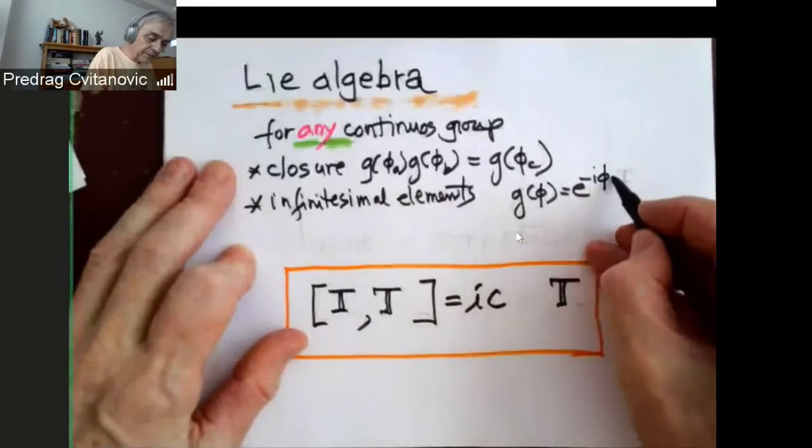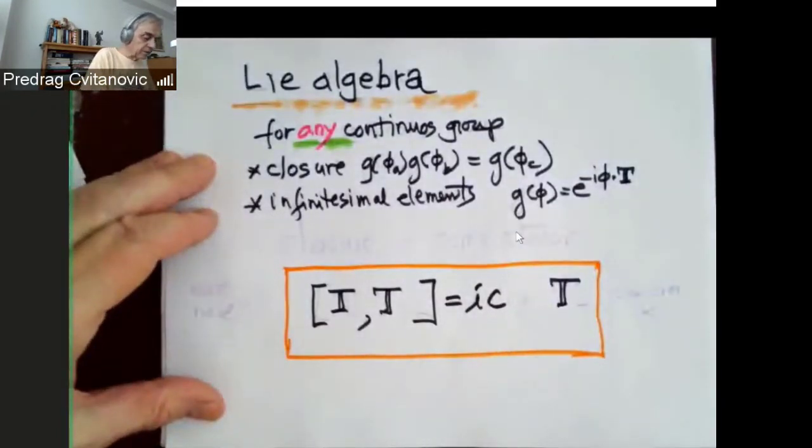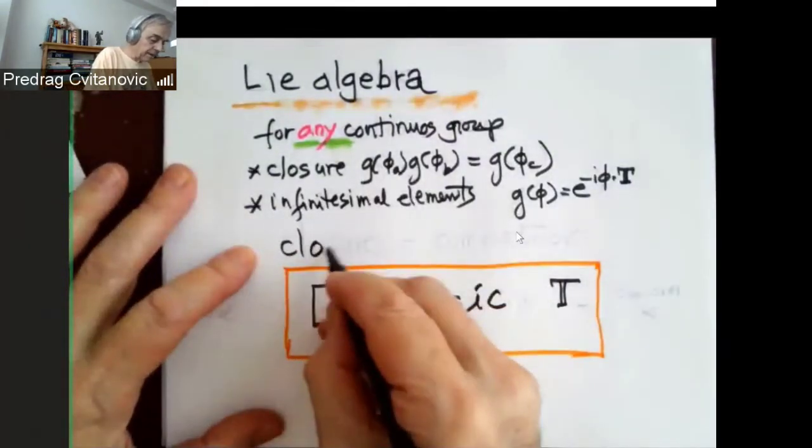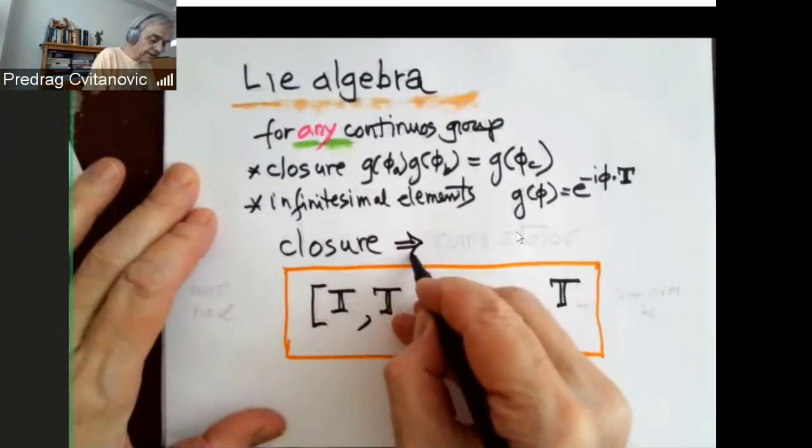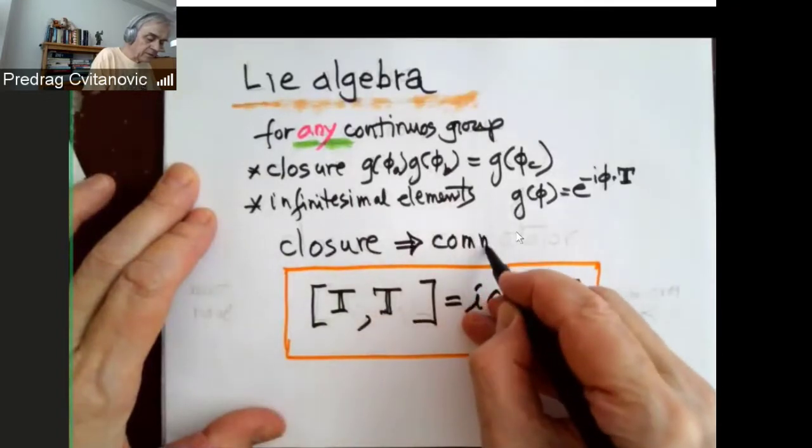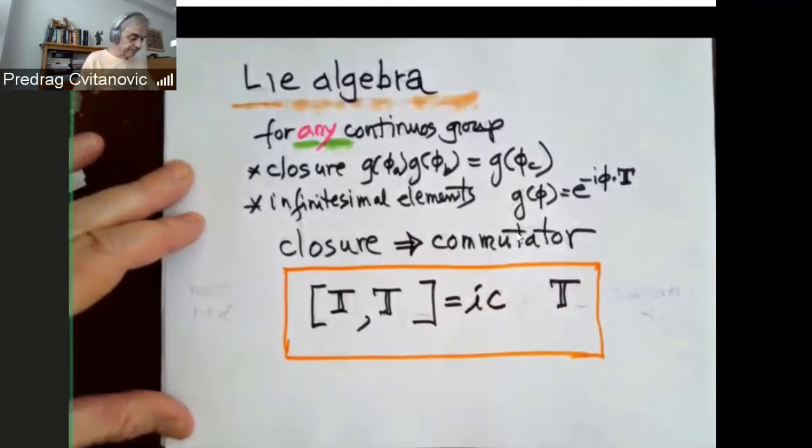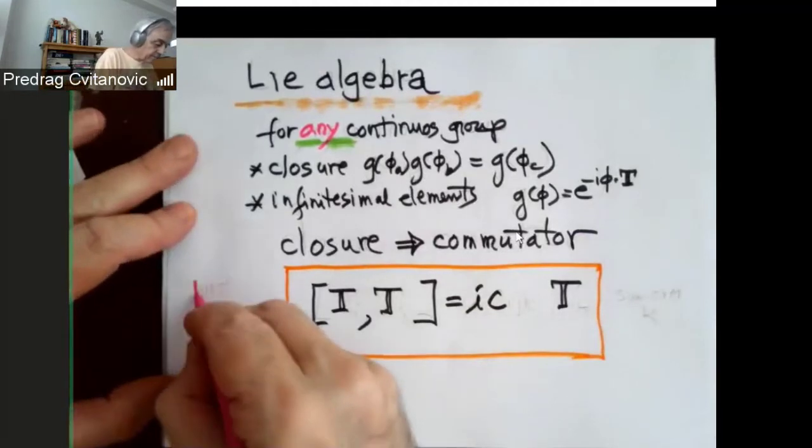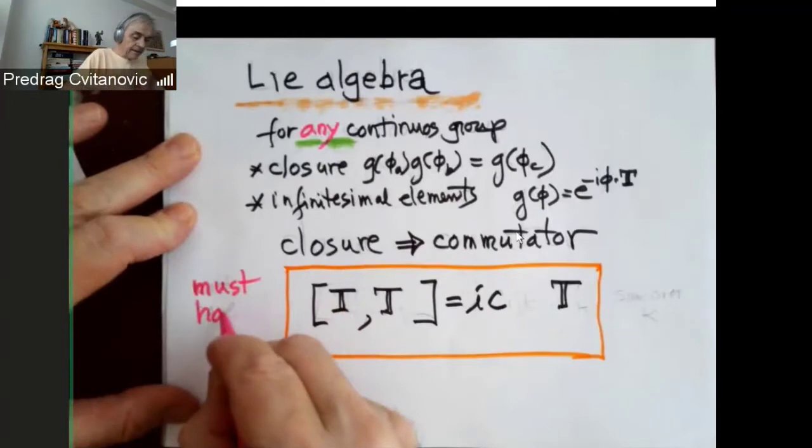And you do this by always starting at unity and taking little steps by the generators, and you demand the closure. You demand that the result is also a group element. And that leads you, inevitably, to a commutator.